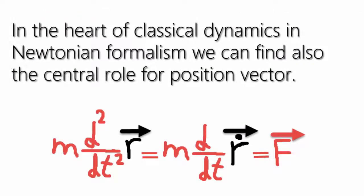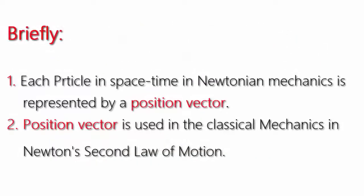In the heart of classical dynamics in Newtonian formalism we can find also the central role for position vector. Briefly: 1. Each particle in space-time in Newtonian mechanics is represented by a position vector. 2. Position vector is used in classical mechanics in Newton's second law of motion.